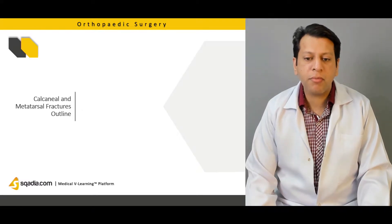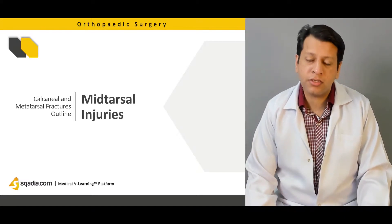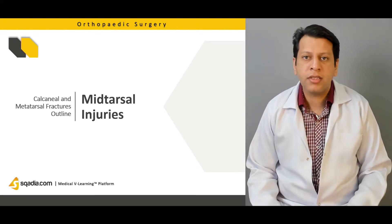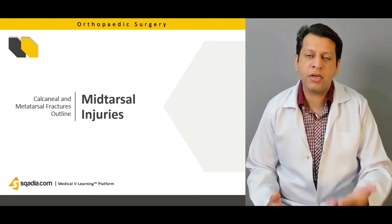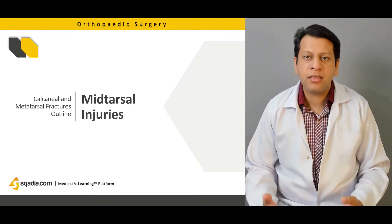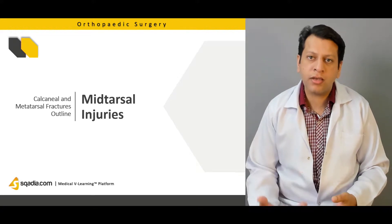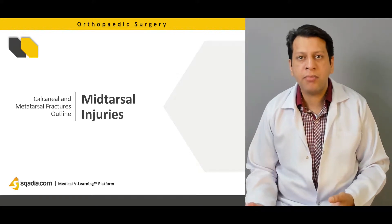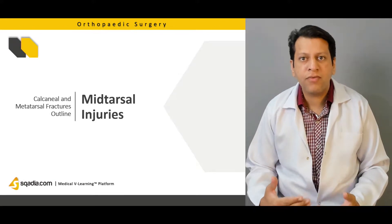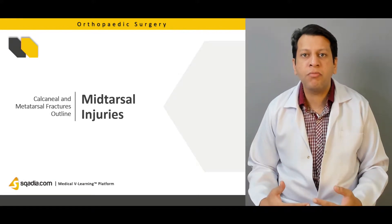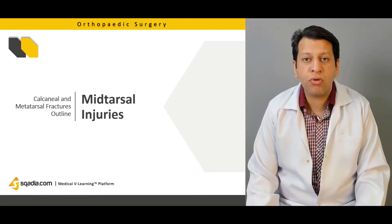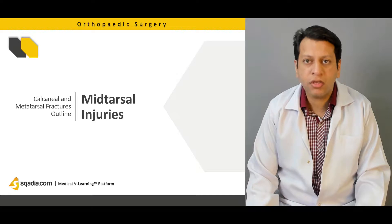Then we will be coming on to discussing the mid-tarsal injuries. As you know, the foot is made up of multiple bones. There are phalanges which are present right in front, which are called toes as well. Then there are metatarsals. Then there are tarsal bones which include the navicular, the medial, middle and lateral cuneiforms. You have the cuboid, and then you have the talus which articulates with the heel bone called the calcaneum. We will be discussing briefly the injuries with the cuboid, calcaneum and all the cuneiforms.